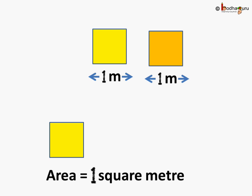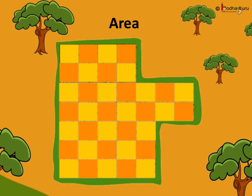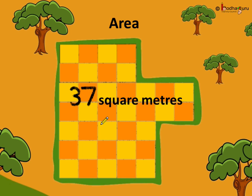Now suppose each side of the square tile used for measuring the land is equal to one meter. Since it is a square, all sides are equal to one meter, and the area of the square tile is 1×1 = one square meter. So the area is equal to one square meter per tile.